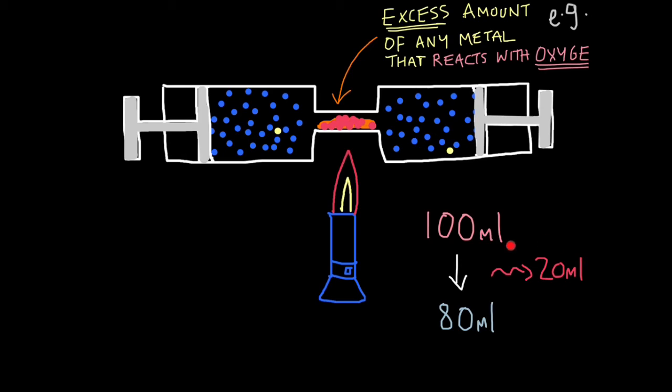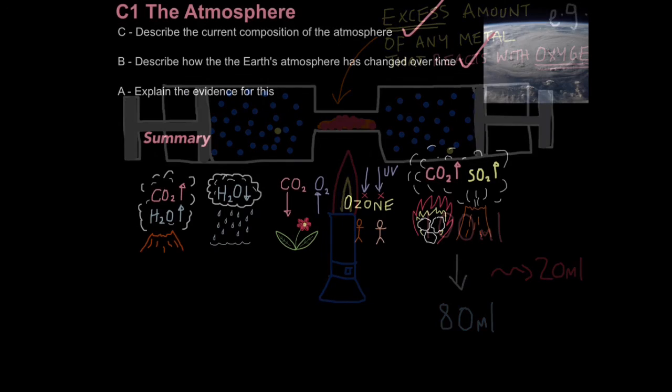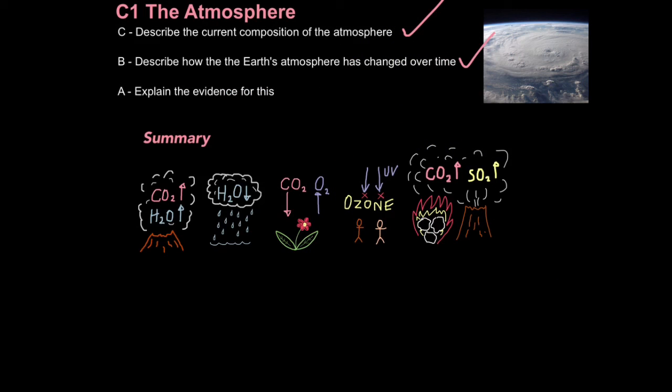This suggests that 20 milliliters of it was oxygen. In other words, 20% of the atmosphere is oxygen. Really simple, nice, easy experiment to prove quite a significant point. And that's how we explain the evidence for atmospheric composition and changes to atmospheric composition.